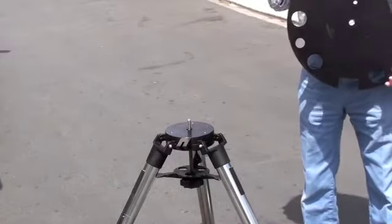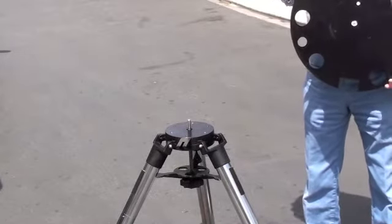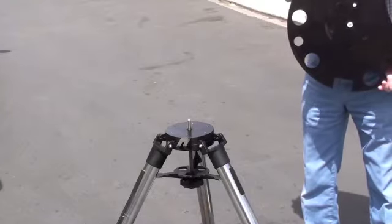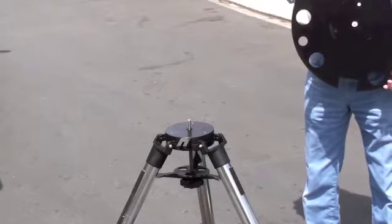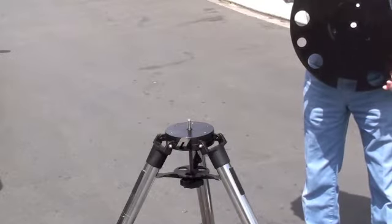The next step is to place the eyepiece tray on top of the field tripod so that the opening in the eyepiece tray fits directly over the tangent arm opening.